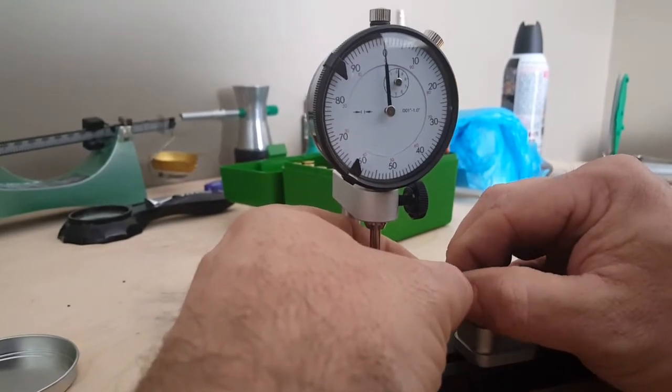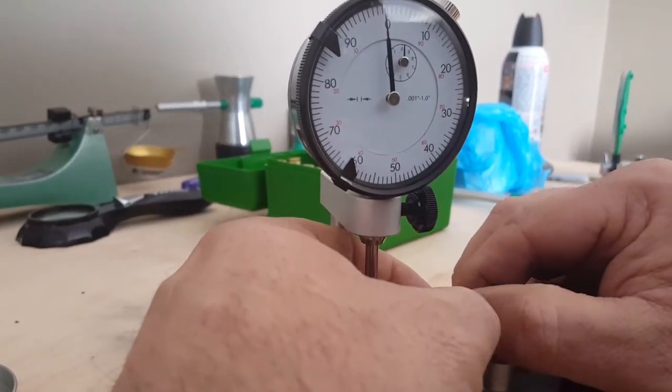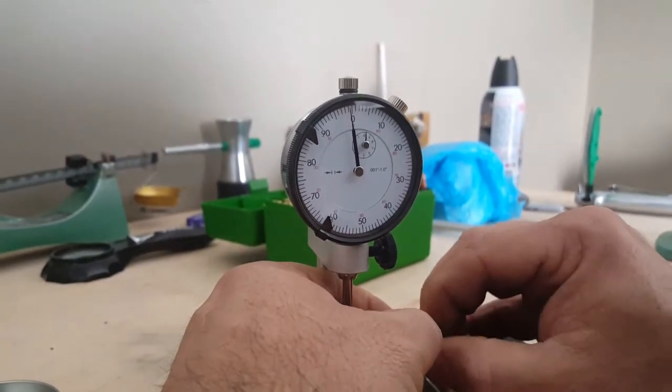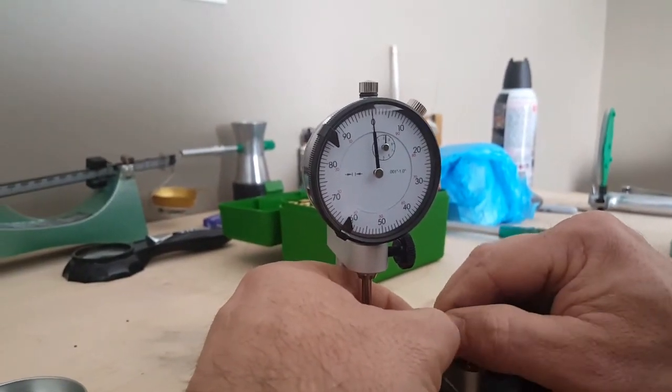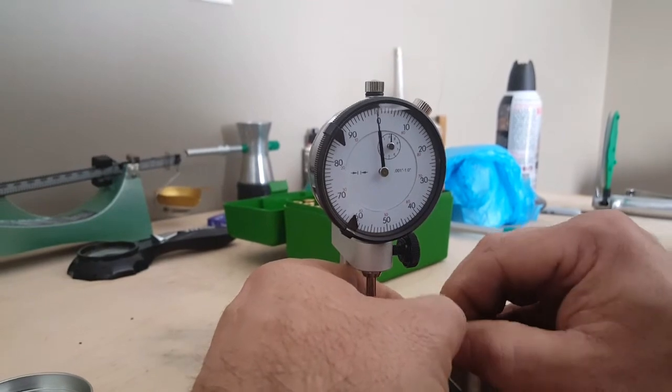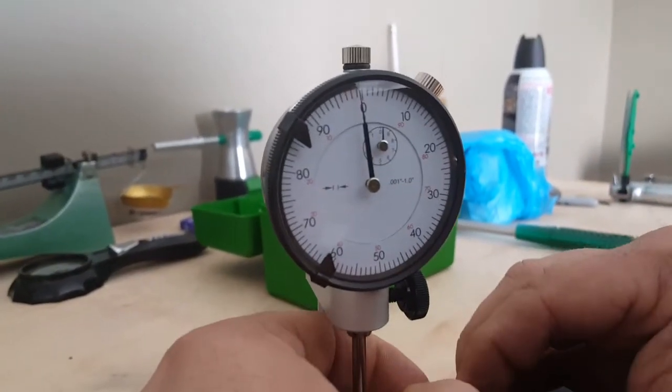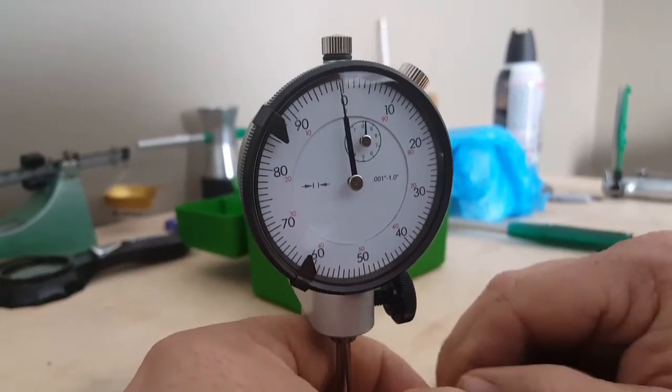That one right there is dead nuts. Had a thou in it a while ago, it's got zero in it right now. Maybe one little wiggle on the needle there, maybe one or two tenths.